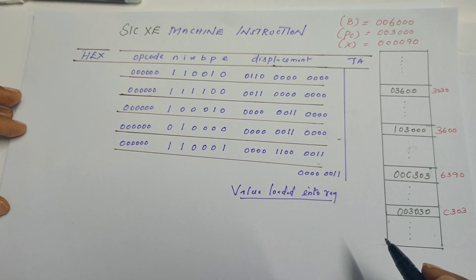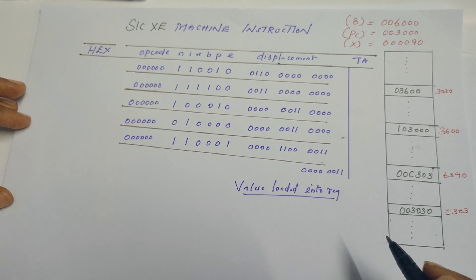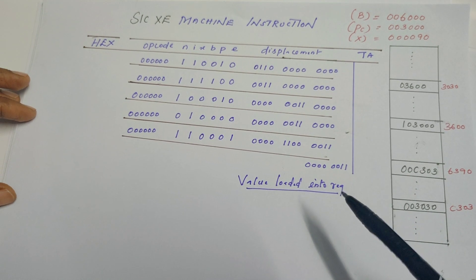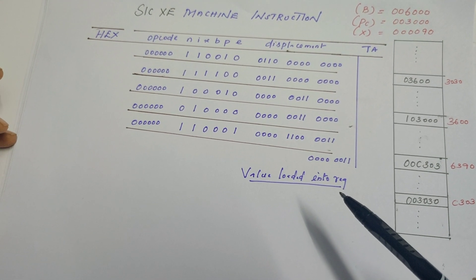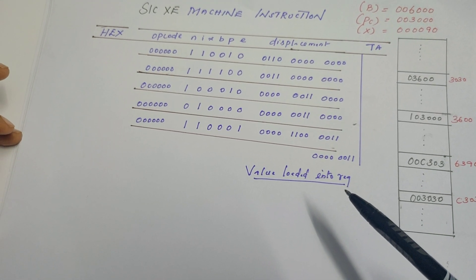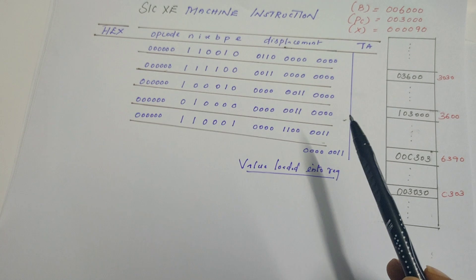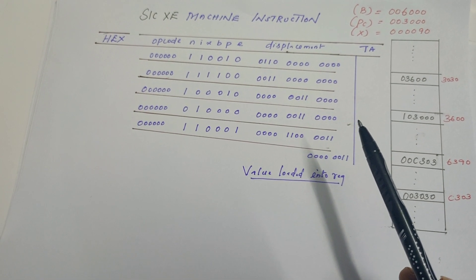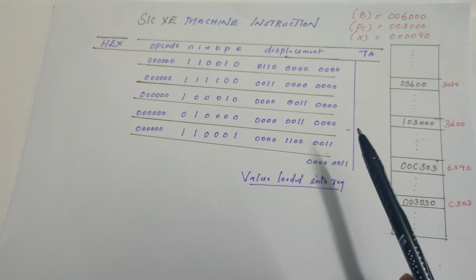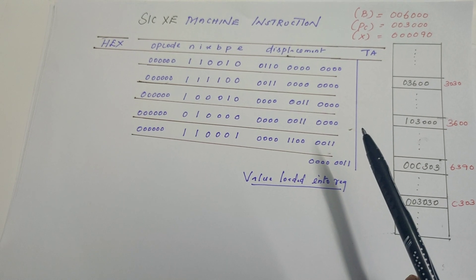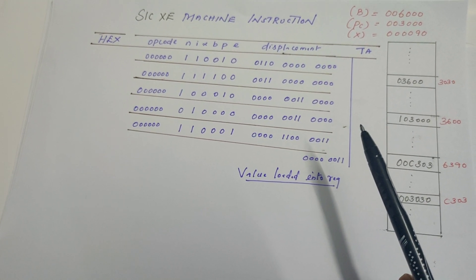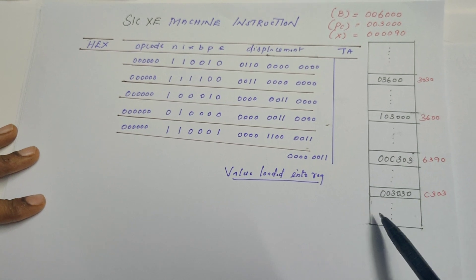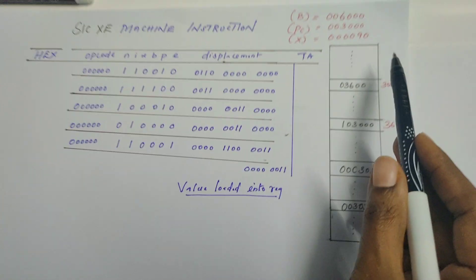Welcome to my channel 'Master Computer Science Subjects.' This is a continuation video on the subject System Software and Compiler Design. In my previous video we discussed the addressing modes of SIC machine architecture, and now we will understand them better by looking into some examples.